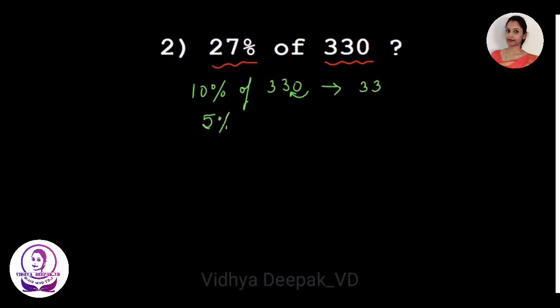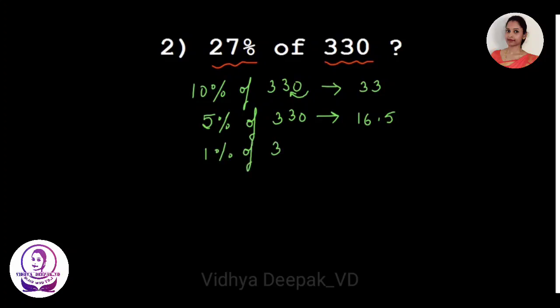We find 5 percent of 330, which is half of 10 percent — half of 33 is 16.5. Then we find 1 percent of 330. To find 1 percent, we shift two decimal places to the left, giving us 3.3. So 7 percent = 5 percent plus 1 percent plus 1 percent.